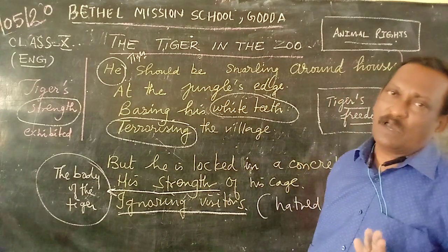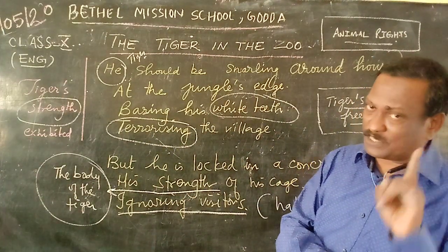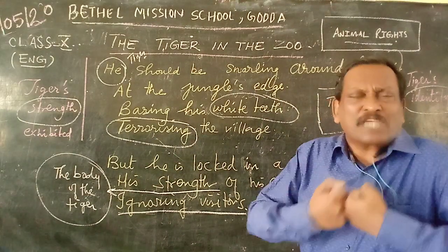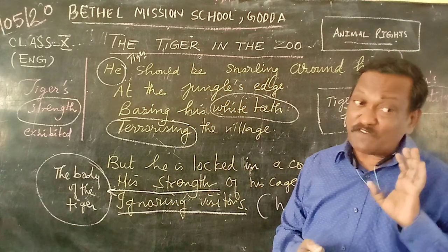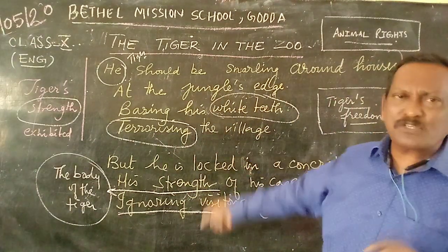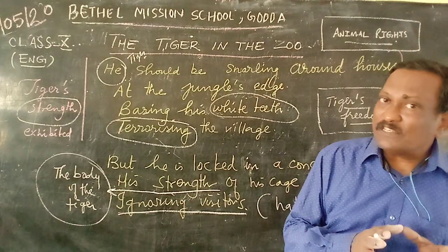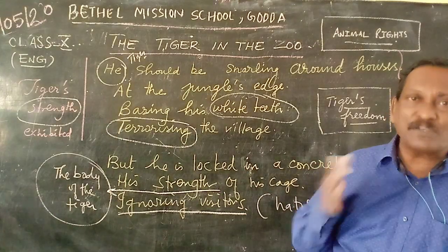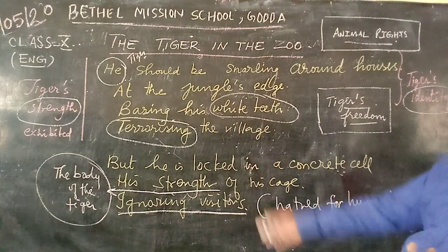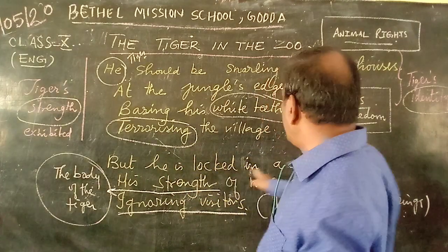No wild animal will go forward to attack somebody without any reason or cause. If you disturb the animals, obviously they will try to protect themselves and retaliate — they will try to defend themselves because God has given them a defense mechanism. But if you don't touch them, they don't touch you. The tiger just terrorizes the village and its intention is not to go on a killing spree. When the tiger feels hungry and if something comes its way, it will try to attack and eat. Instead of having its identity in the jungle, the tiger is put in a small concrete cell.